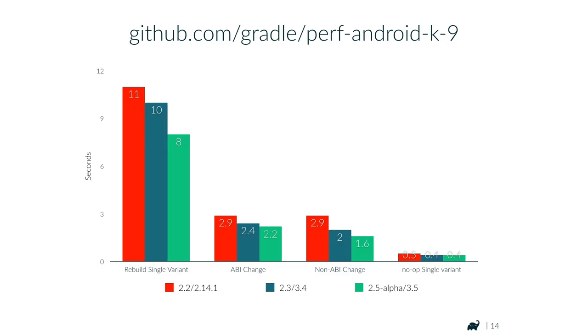Imagine you own this project and you read in the release notes that configuration time is now up to 36 times faster with 2.5 alpha — it's true, we've seen it in the other project. Then you try it and see it's not faster at all for your project. Performance has many dimensions and depends a lot on context. We're now strict about performance claims: we always show a reproducible project, and you have to see how that context applies to yours.